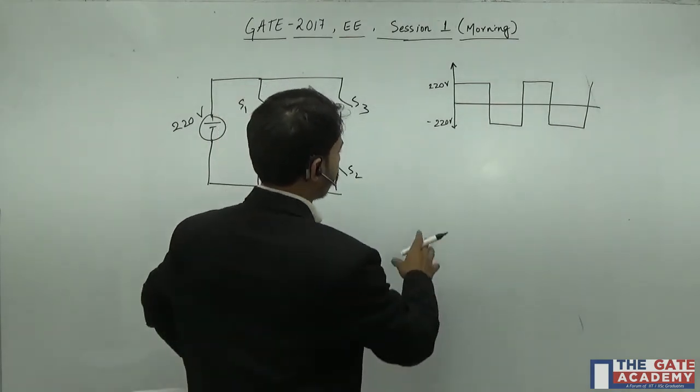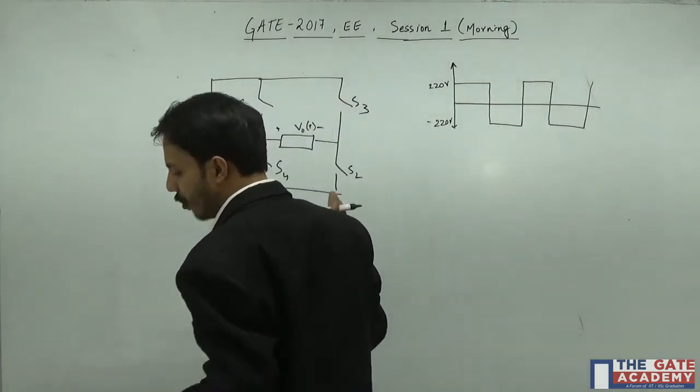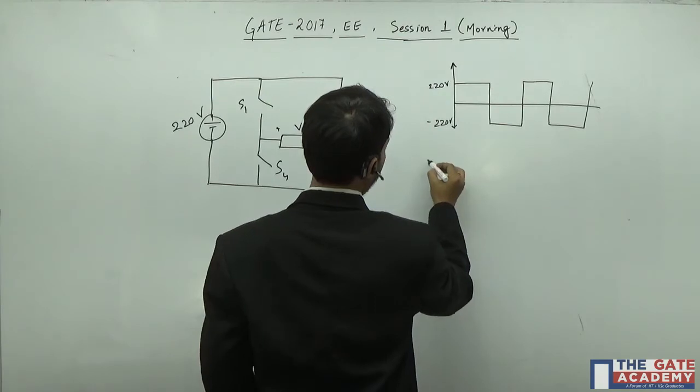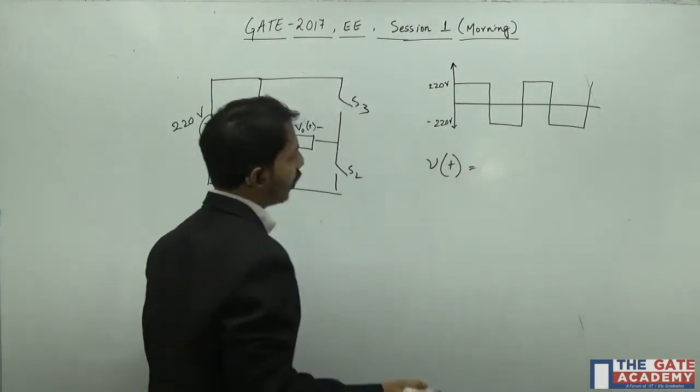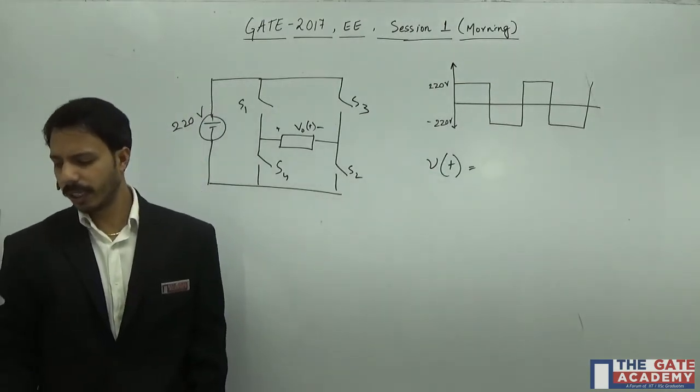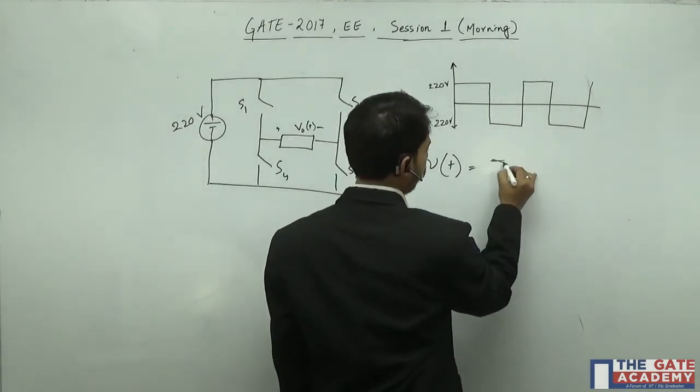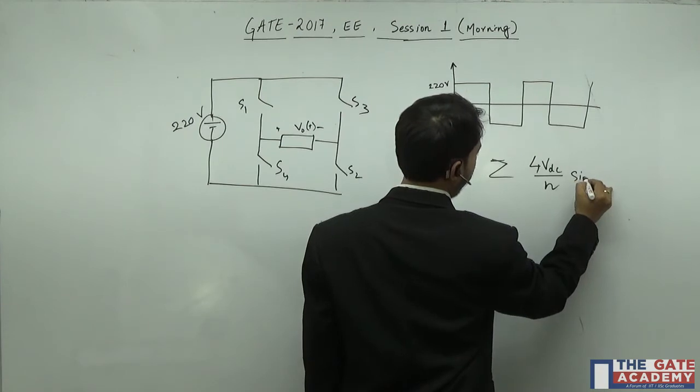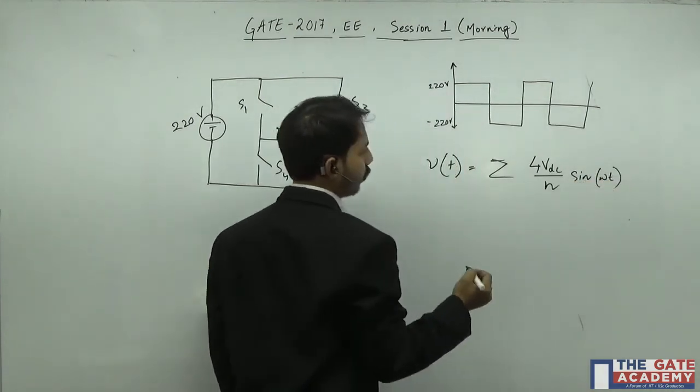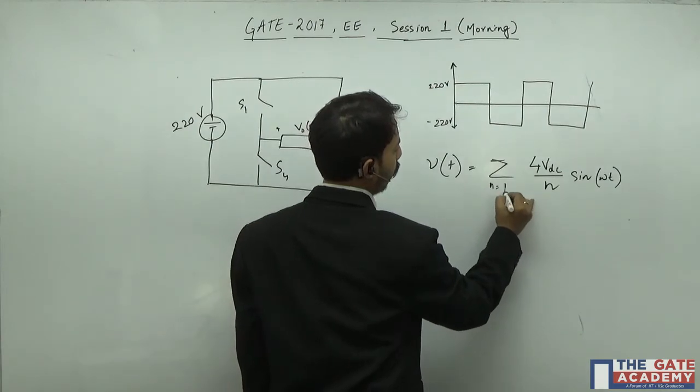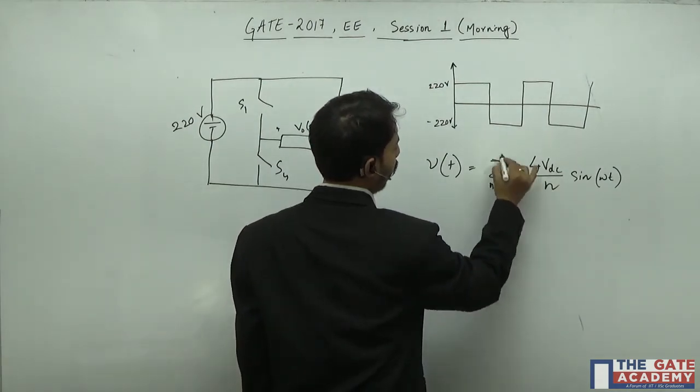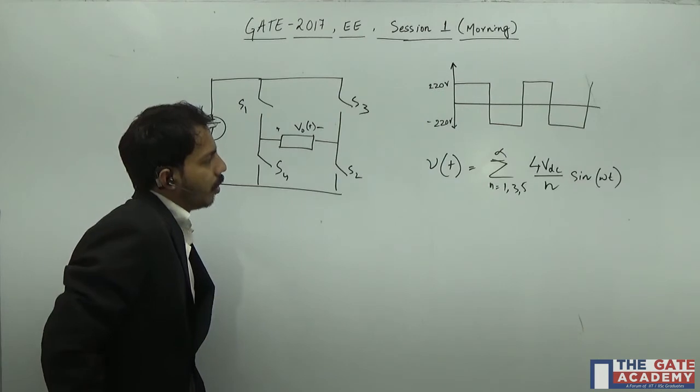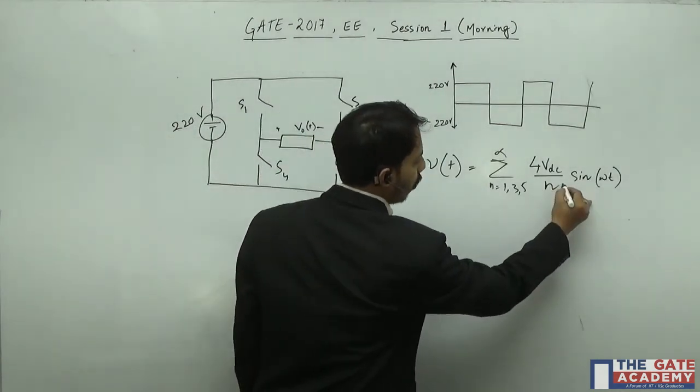Now folks, for this particular type of waveform, if we see what is the Fourier series expansion, it will be something like 4 VDC by n pi sine omega t, and this will be n equals 1, 3, 5 to infinity. Now we need the RMS value of the fundamental. That means when n is equal to 1, this will be pi here.